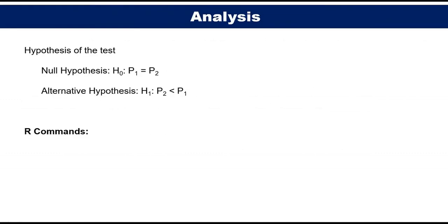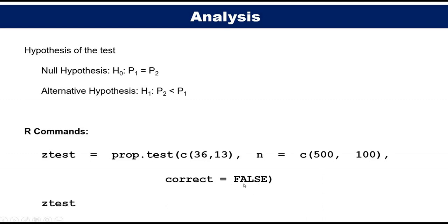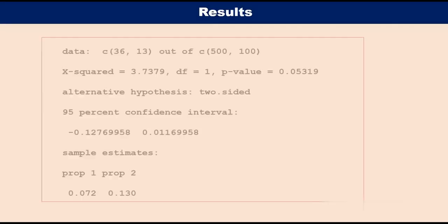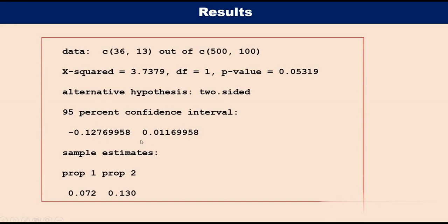Let's calculate the proportion and compare them. As usual, first we need to define the null hypothesis. Here the null hypothesis is p1 equal to p2 and the alternative hypothesis is p2 less than p1. The R command is: prop.test(c(36,13), n=c(500,100), correct=FALSE). If we run this command, then the result is: